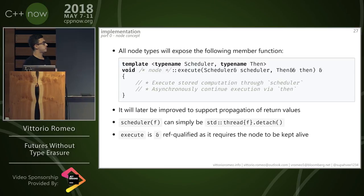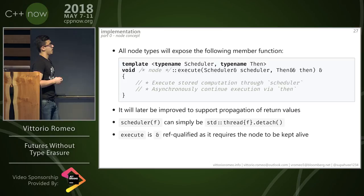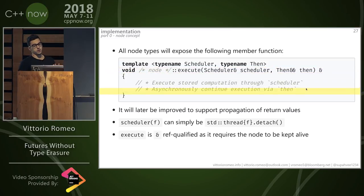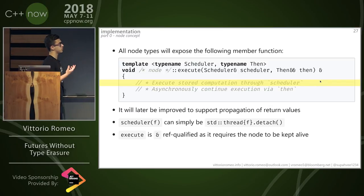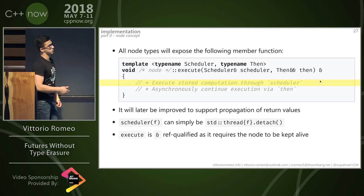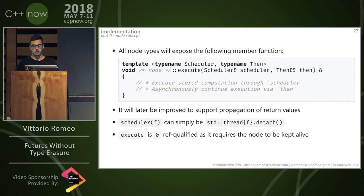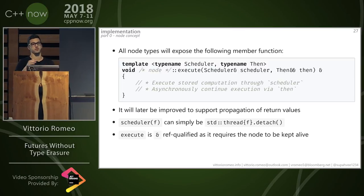The node concept is very simple: all node types — sequential, all, or leaf — must expose a member function called 'execute', which takes a scheduler as its first argument and a continuation by forwarding reference. When calling execute, the stored computation in the node will be executed through the scheduler — for example, std::thread detached — and then asynchronously continue execution with the 'then' continuation when done. The scheduler can be simply something that creates a thread for a computation, but could be more clever with a thread pool. execute is l-value ref qualified because it requires the node to be kept alive — it doesn't make sense to execute a temporary, as it would die immediately and we'd lose the stored shared state.